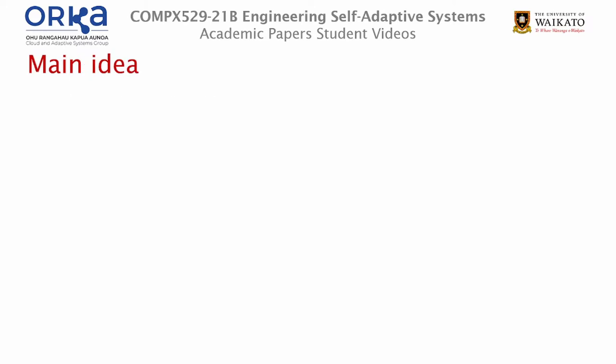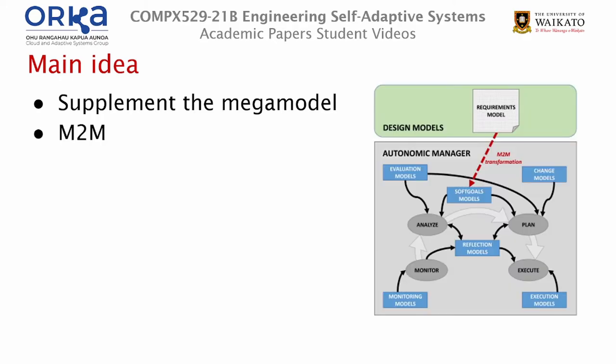A mega model is defined in the paper as a specific model capturing both runtime models and adaptation activities — in other words, one that encompasses the entire system and all its behaviour. This paper proposes to add an explicit high-level model to the runtime mega model which models the soft goals of the system, linking them to reconfiguration policies already available, and thus tying changes in the model to architectural modifications. This model, providing it's well-defined, can be automatically converted into a runtime model using model-to-model transformations, as shown in this diagram here.